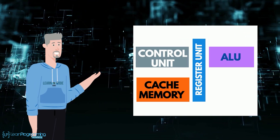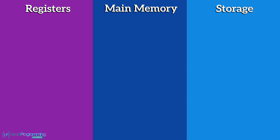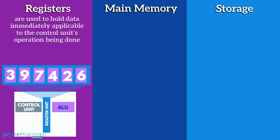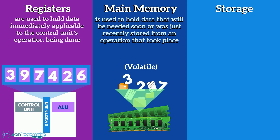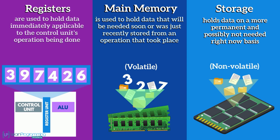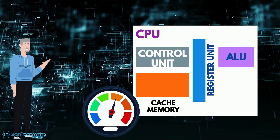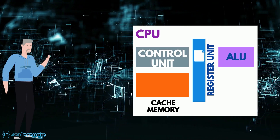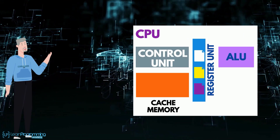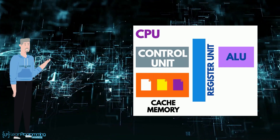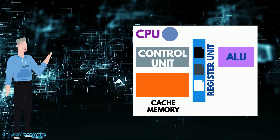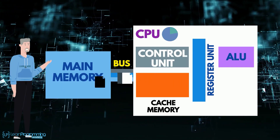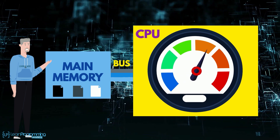Before explaining cache memory, let me summarize: registers are used to hold data immediately applicable to the control unit's current operation; main memory holds data that will be needed soon or was just recently stored; and storage holds data on a more permanent basis. Cache memory is very high-speed memory located within the CPU itself. The CPU attempts to keep a copy of data it anticipates might be needed soon, moved there ahead of time. Changes made to cache memory are then moved back to the registers quickly, and at a more convenient time moved from the registers back to main memory, improving the CPU's overall speed and efficiency.